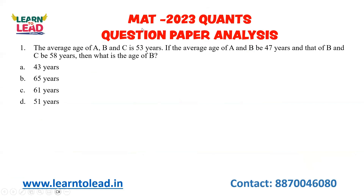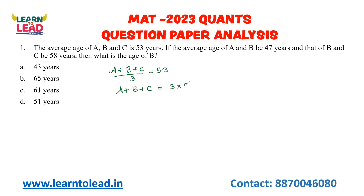See the first question. The average age of A, B and C is 53 years. If the average age of A, B and C is 53 years, you should be able to calculate the total age of A, B and C. It is nothing but 3 into 53, so 159 years.